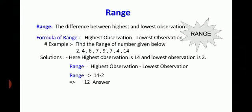Now, come to the next topic, range. The difference between the highest and the lowest observation is called range. For example, you have to find the range of the numbers given below: 2, 4, 6, 7, 9, 7, 14. Here, 14 is the highest observation and 2 is the lowest observation. We know that range equals highest observation minus lowest observation. 14 minus 2, that is 12.